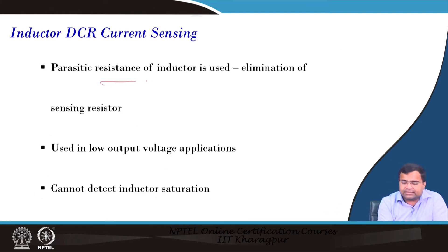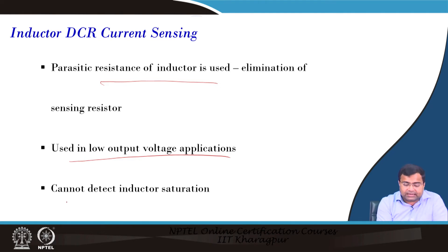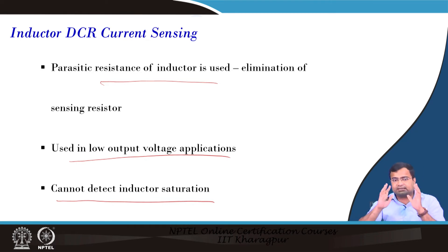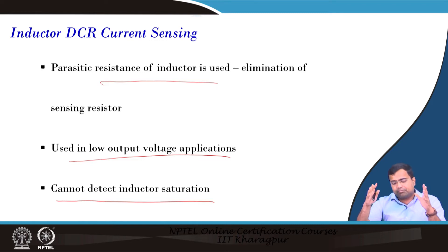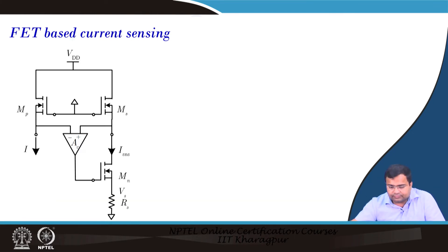With DCR sensing, the inductor's parasitic resistance is used and no physical resistance is needed in the power path, making it ideal for low-voltage high-current applications. However, it cannot detect inductor saturation, because the technique assumes the inductor remains in the linear region. Once the inductor saturates, the mathematical model is no longer valid, so saturation cannot be detected.